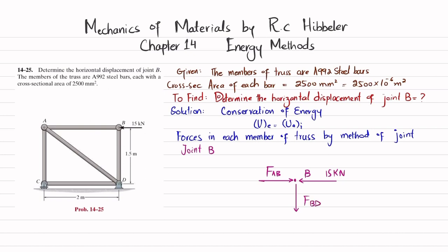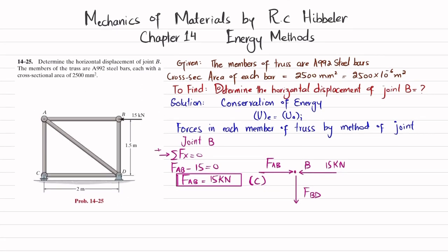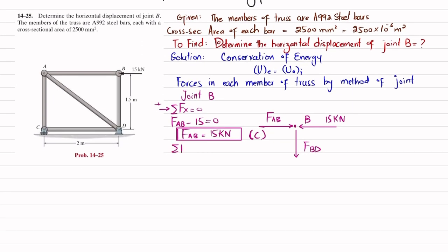Applying equilibrium at joint B: sum of forces in the x-direction equals zero. Taking rightward as positive: FAB − 15 = 0, so FAB = 15 kN. Since this member pushes on joint B, it is in compression. Sum of forces in the y-direction equals zero: FBD is the only force, so FBD = 0.